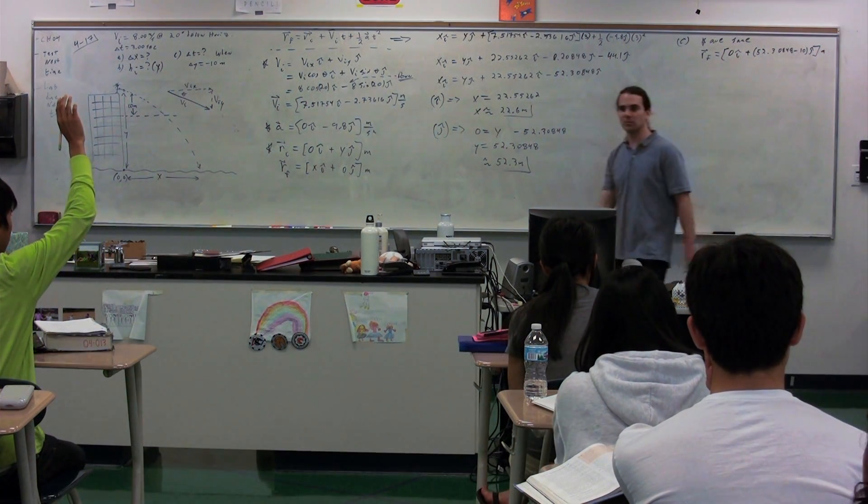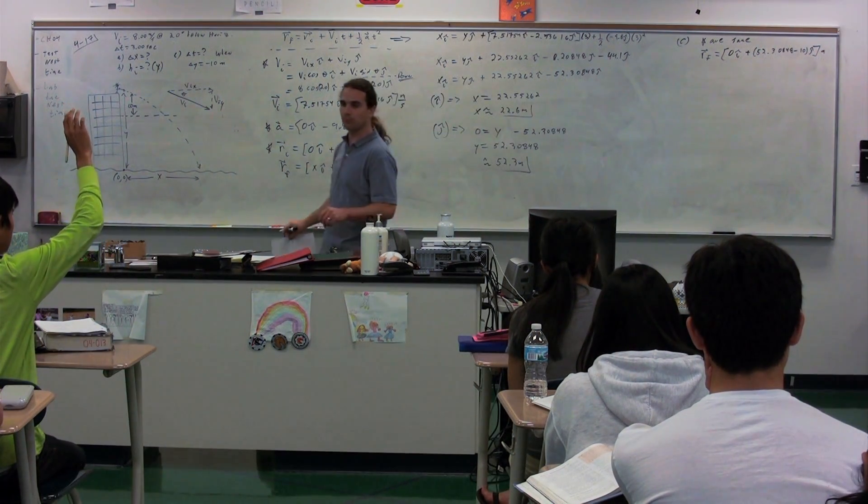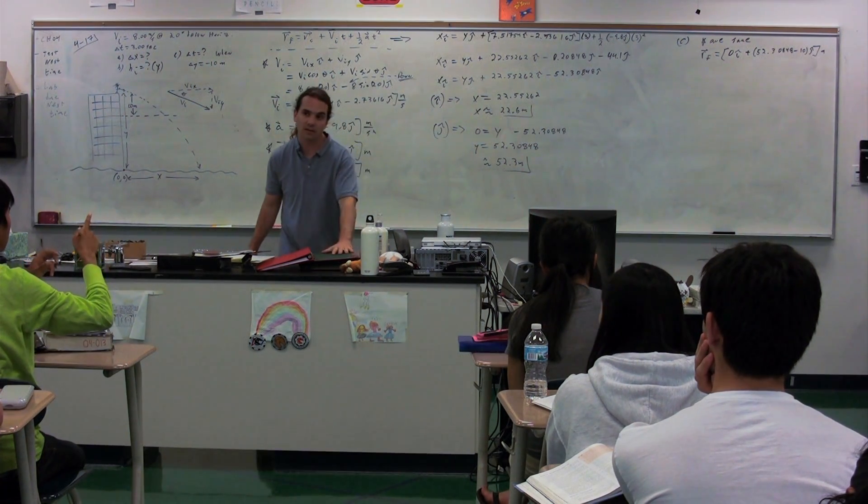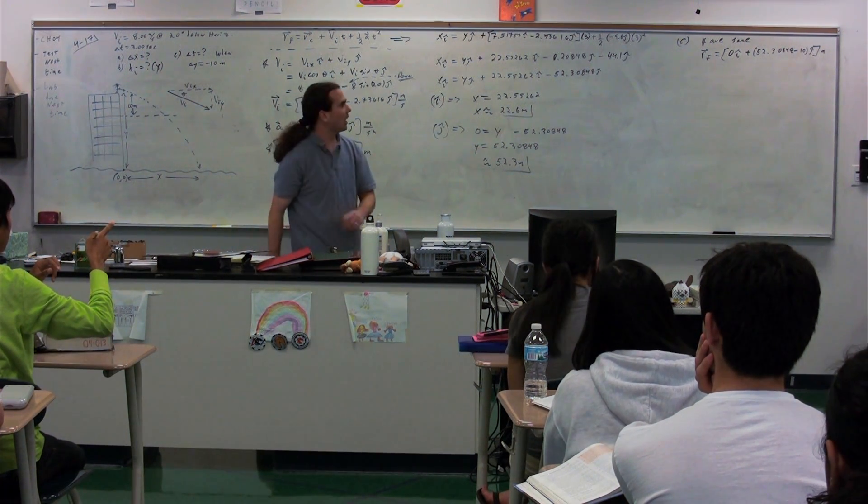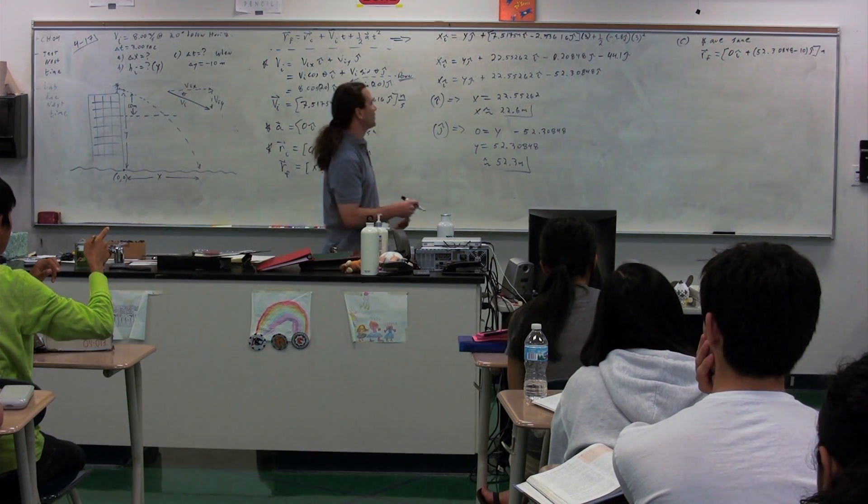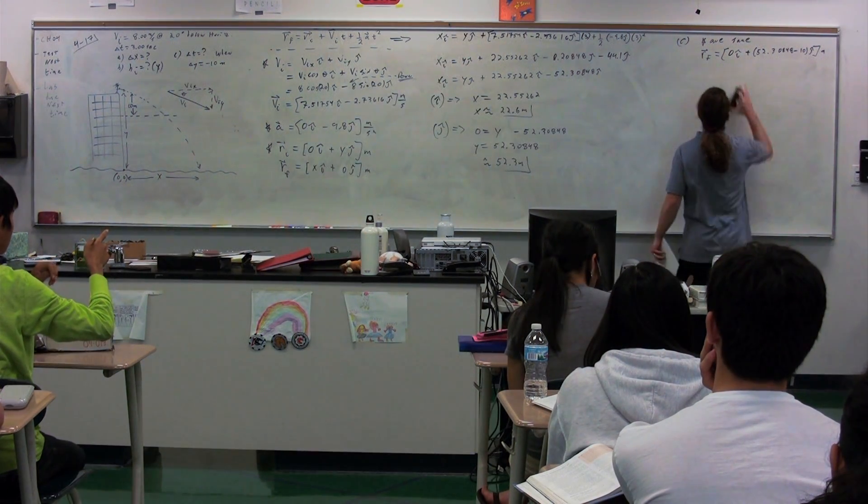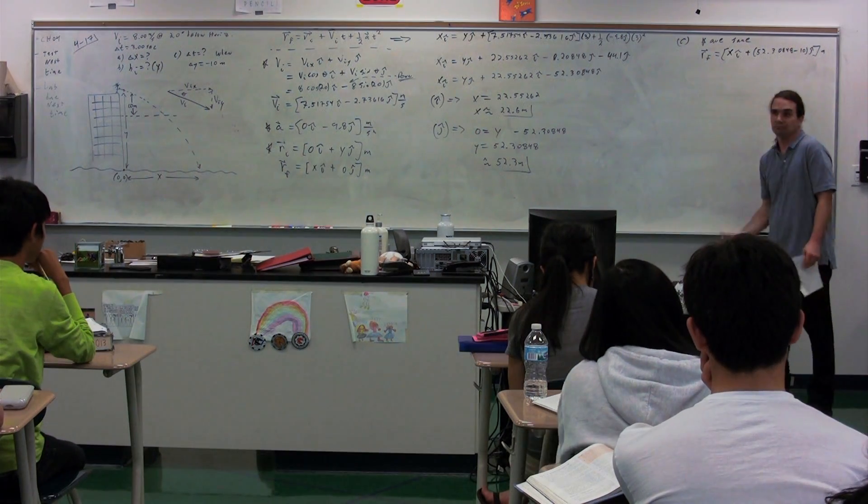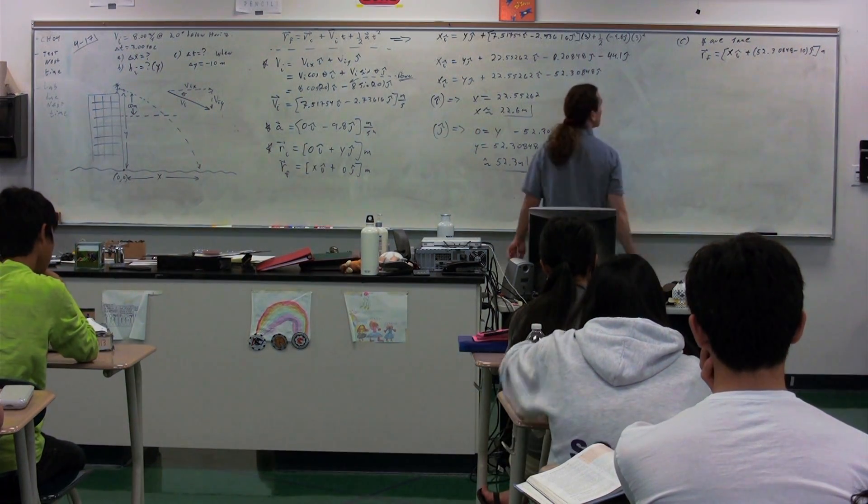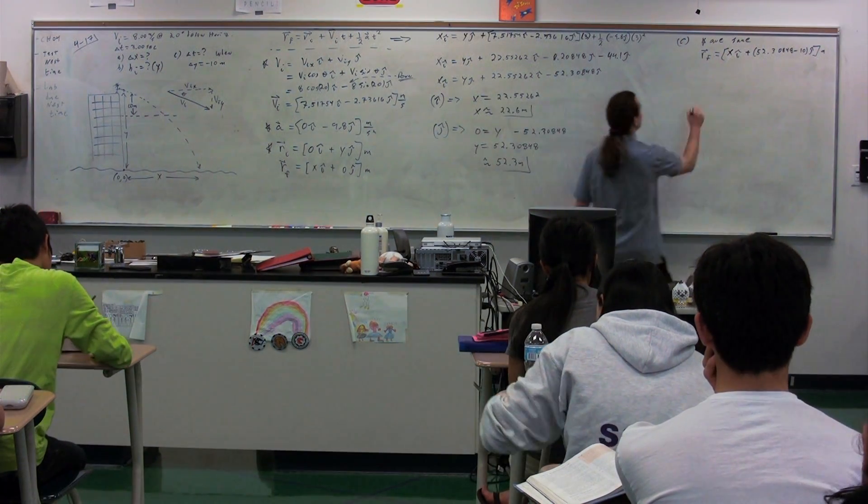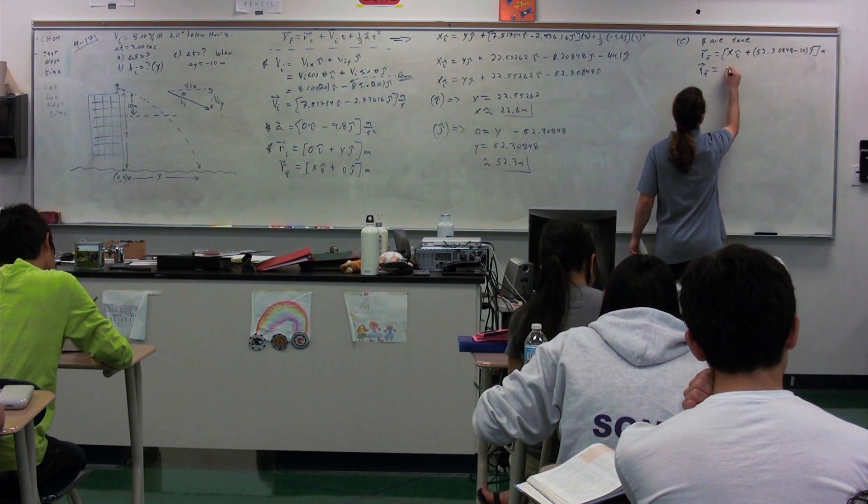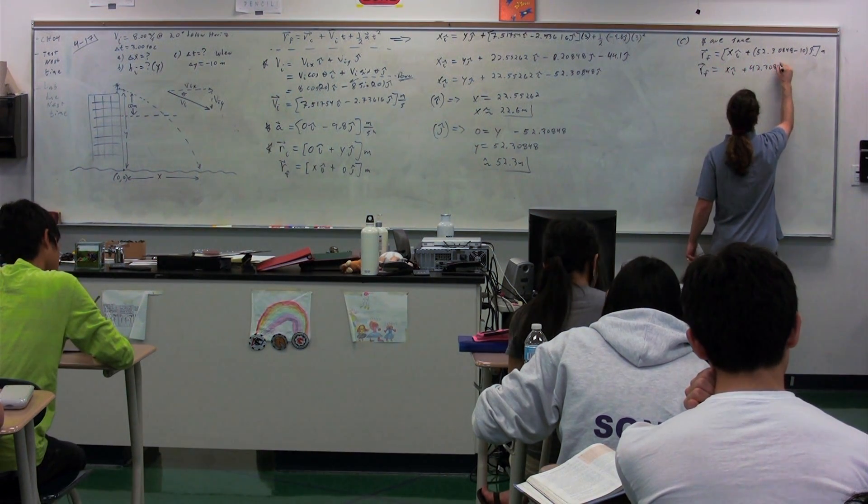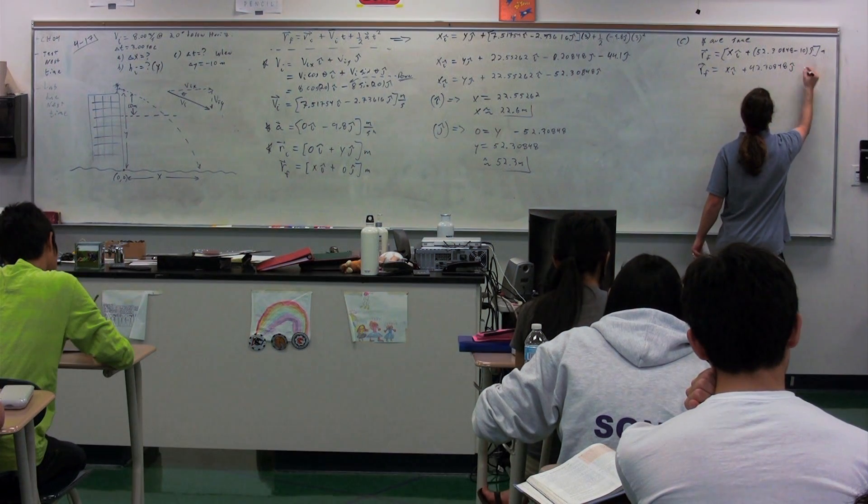Because it's gone down 10 meters from this initial position here. Position final is not 0i. Oh, actually, that's a good point. 0i, we don't know this. I'll just put an x. We don't know it. Thank you. So we have, then, position final is equal to xi plus 42.30848j.